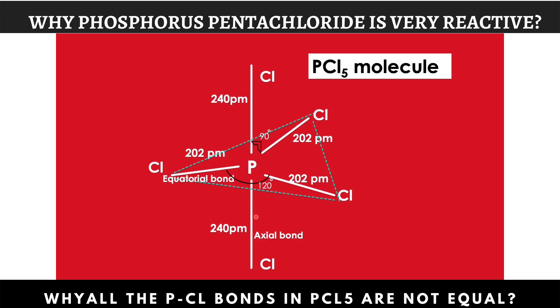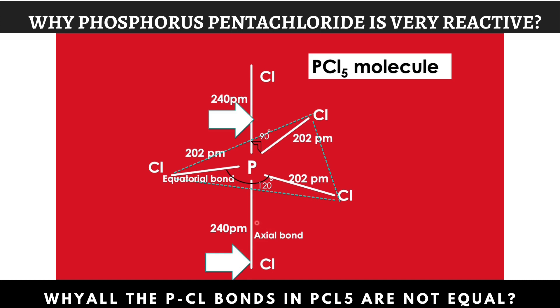When compared to equatorial bonds, we can see that 2 other bonds are there. They are longer in size. These bonds are called axial bonds. These bonds are longer — 240 picometers.